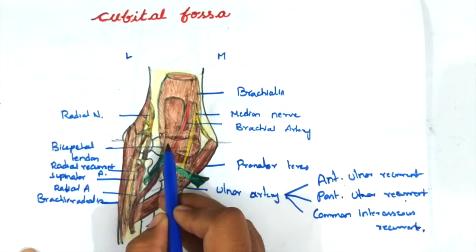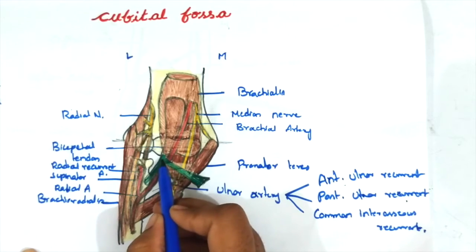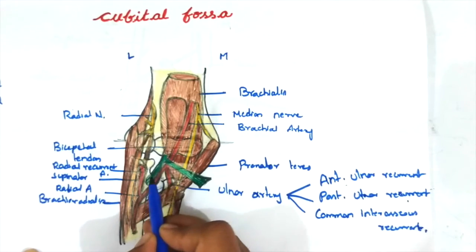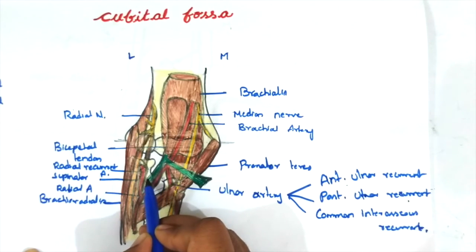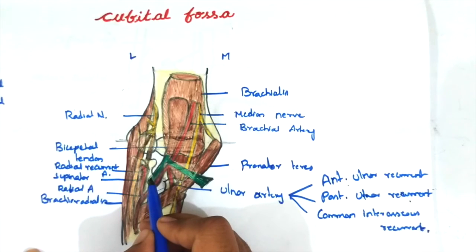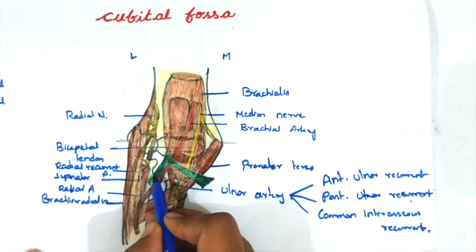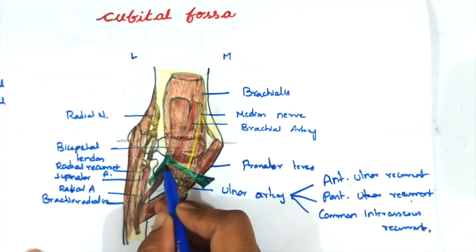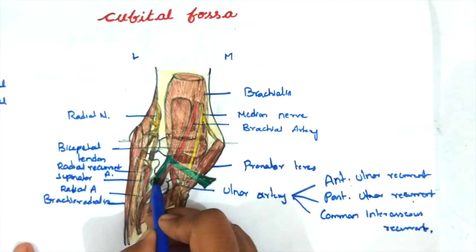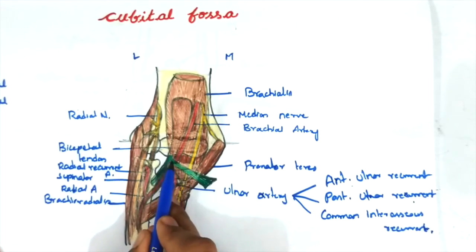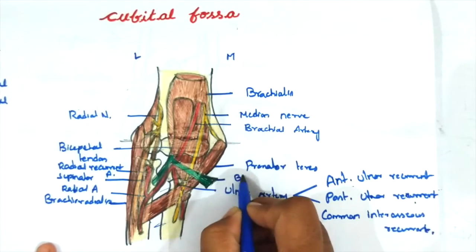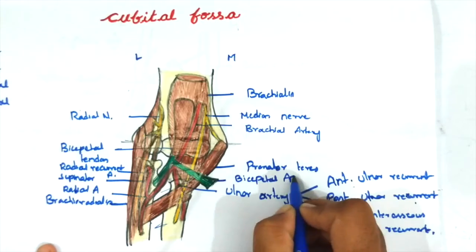The biceps brachii muscle passes downwards and laterally, inserting at the posterior rough part of the radial tuberosity. A bursa separates the tendon from the anterior rough part. The tendon inserts in a twisted manner. Before inserting into the tuberosity, from its medial margin it gives a small extension towards the medial side known as the bicipital aponeurosis.